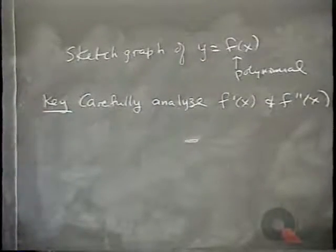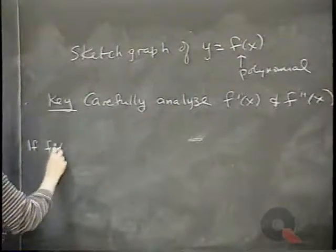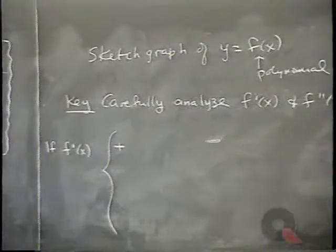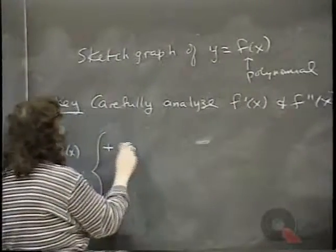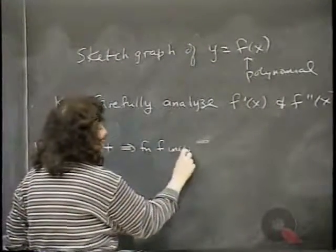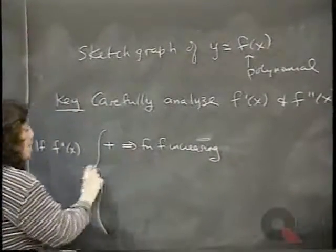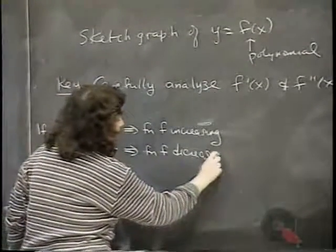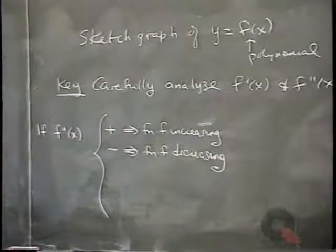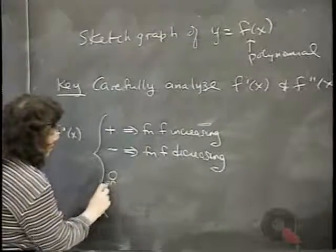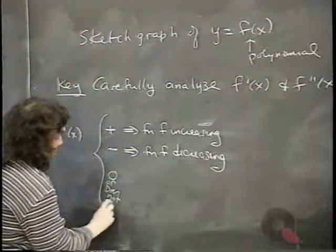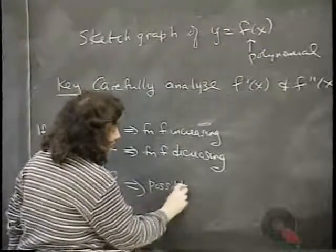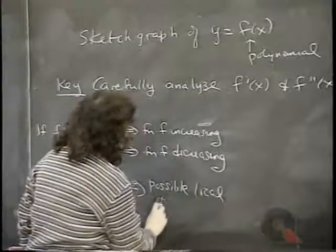When we analyze the first derivative, what are we looking for? If f prime of x is positive, the function f is increasing. Where f prime of x is negative, the function is decreasing. And if f prime of x is zero or does not exist, this leads to a possible local max or min.